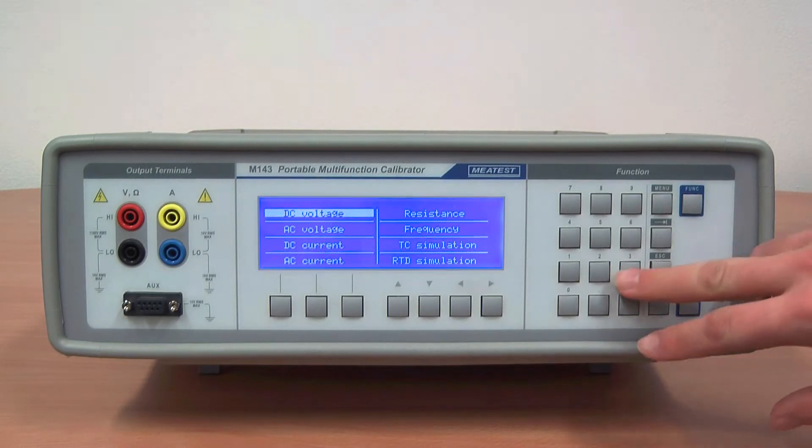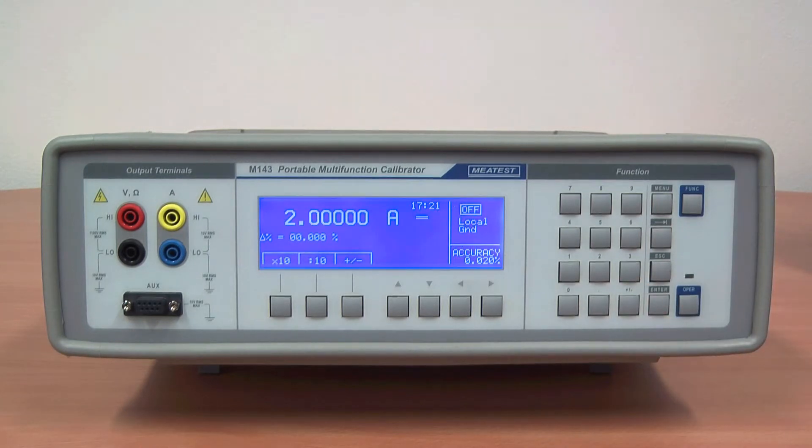Let's start with DC current for instance. In this function you can clearly see the main value, accuracy, output status, allowed deviation and a few soft keys.